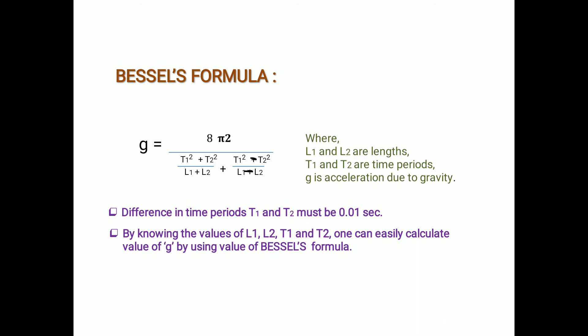I hope you have understood how to perform the reversible compound pendulum experiment, what Kater's reversible pendulum is, its use, construction, procedure, and how to accurately calculate the value of g using Bessel's formula. Write down this topic in your notebook, revise it, and be ready for assignments. I will cover the next topic in another video. Thank you and bye-bye.